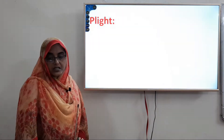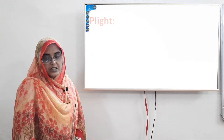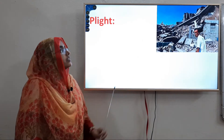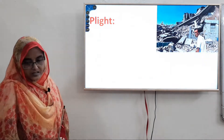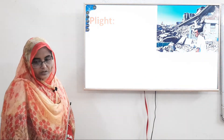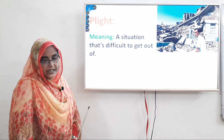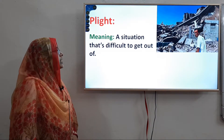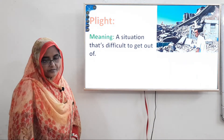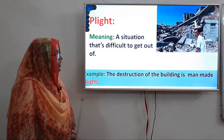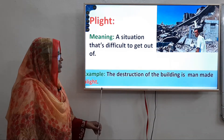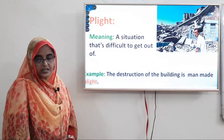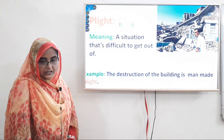Next word: Plight. Pronunciation is 'plight.' We see a picture of a devastating situation. Plight is a situation that's difficult to get out of. Here is a sentence: The destruction of the building is a man-made plight. It is also a noun.